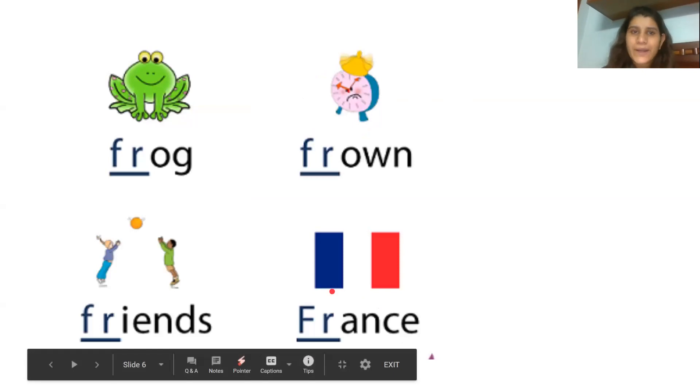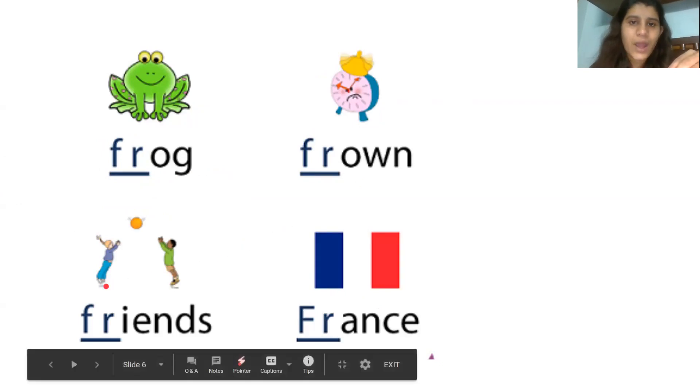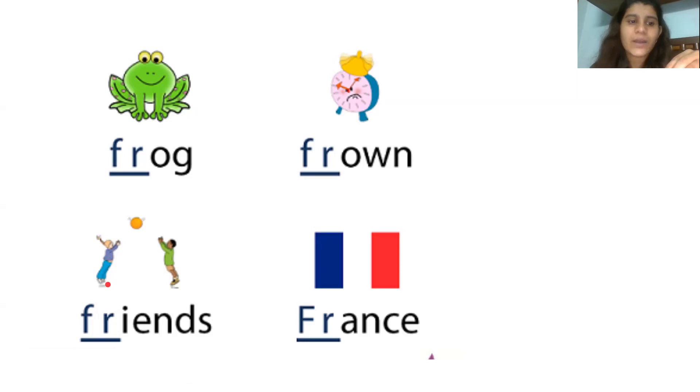Now, here we have some words. We will pronounce them together. You will see, listen, repeat. So, we know FR makes the sound fr. So, this is fr-og, frog. Fr-og, frog. Repeat. Fr-og, frog. The next is fr-own, frown. Fr-own, frown. Repeat. Fr-own, frown. The next is fr-ends, friends. Fr-ends, friends. Repeat. Fr-ends, friends. Great.